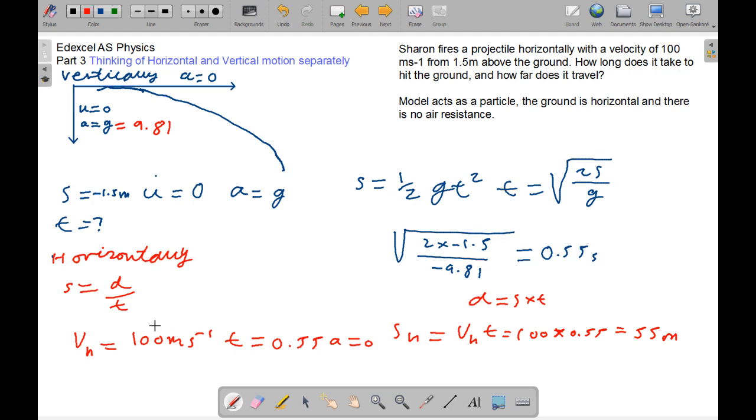Now, knowing that this is 0.55 seconds, horizontally, we can now calculate the horizontal motion. And it's not affected by gravity, or any other force, because now it moves at a constant speed. So, we could just use speed equals distance over time. This is how you write it in the Edexcel exam board on the formula sheet.